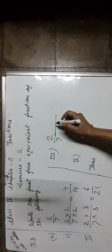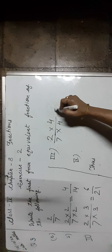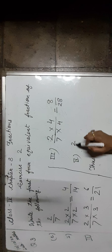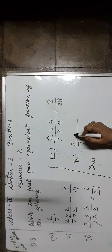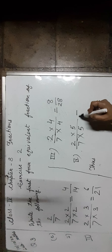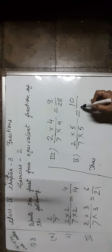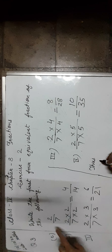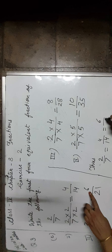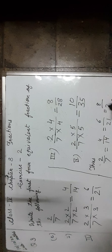Now let us find the third equivalent fraction of 2 upon 7. We multiply both numerator and denominator by 4, which is equal to 8 upon 28. For the fourth equivalent fraction, we multiply by 5 in numerator and denominator, which is equal to 10 upon 35. Thus, 2 upon 7 is equal to 4 upon 14, 6 upon 21, 8 upon 28, and 10 upon 35.